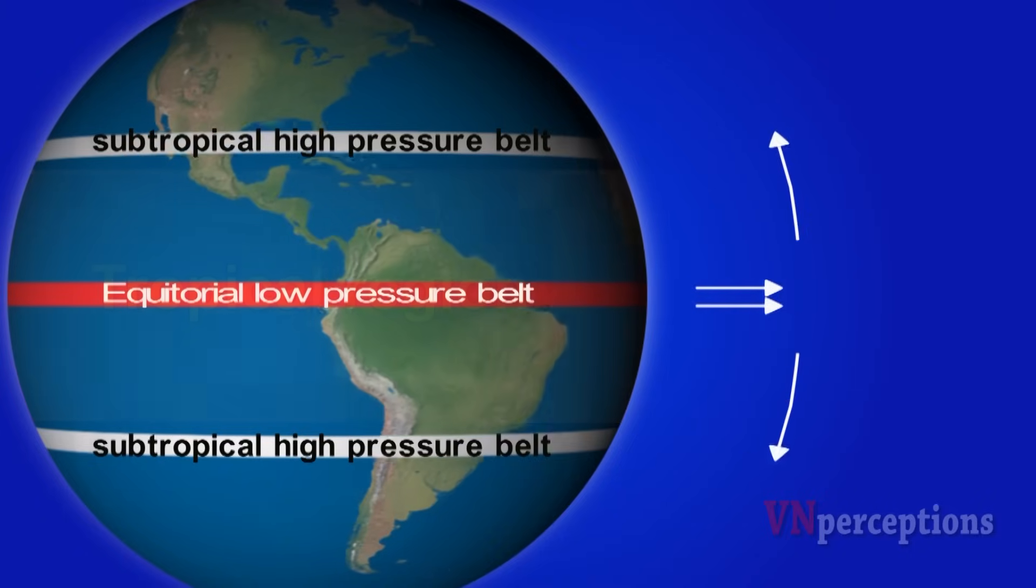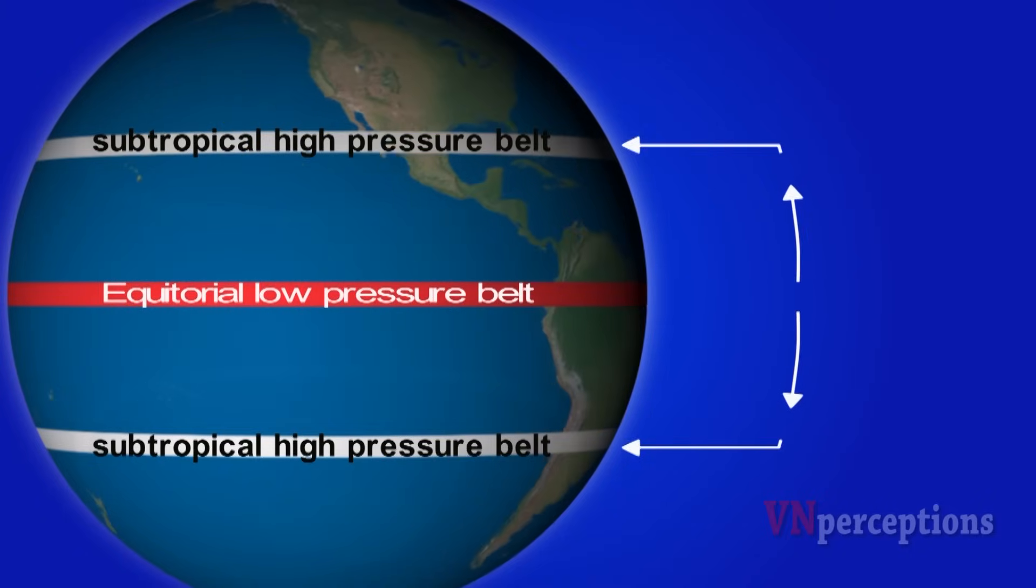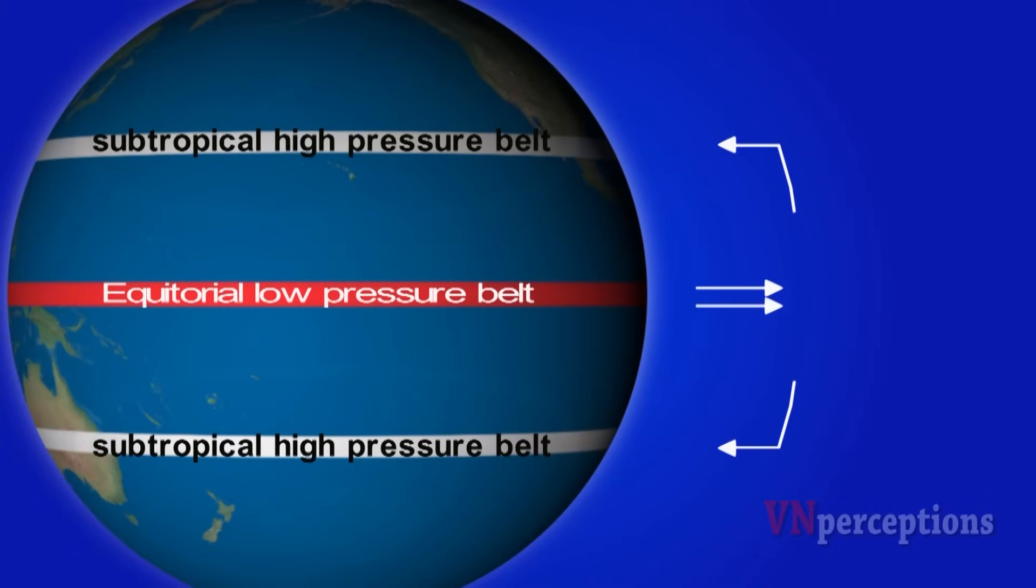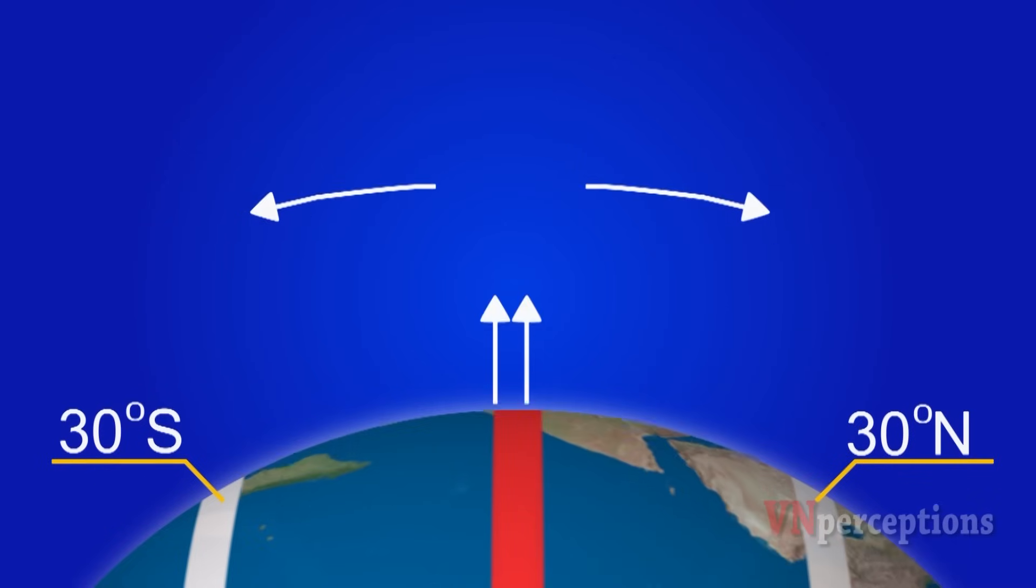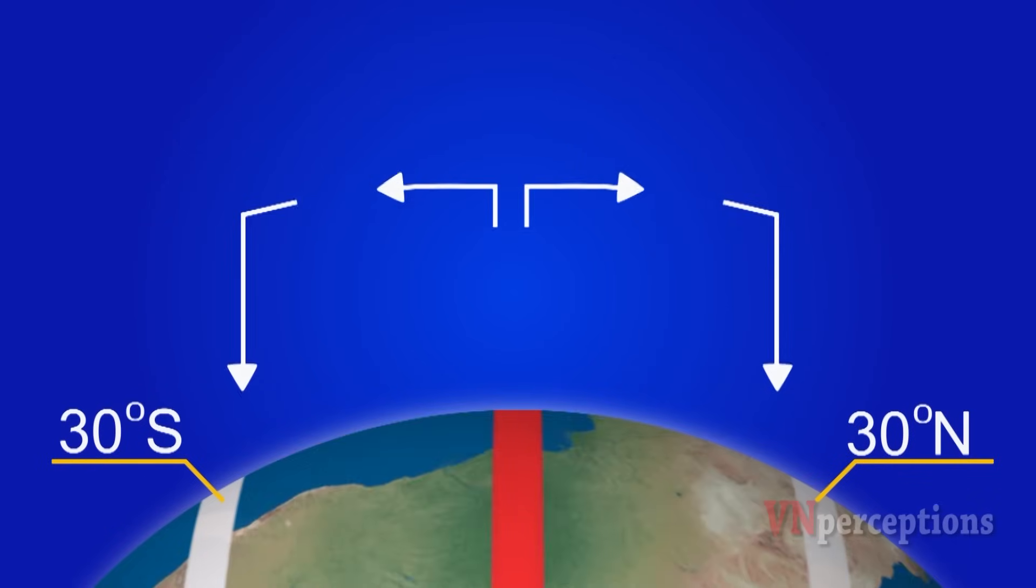The sinking air now moves towards north and south. So along the equator the warm air rises, spreads out and cools and sinks down. In this way it develops convectional currents.